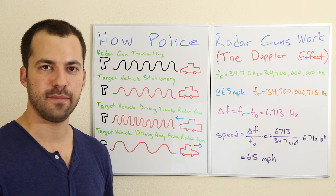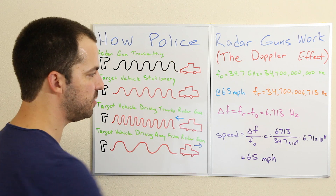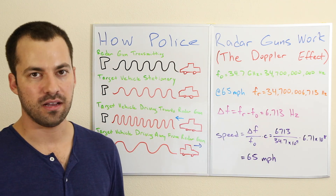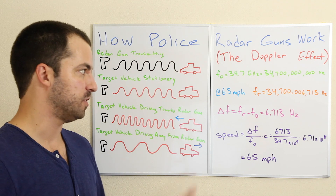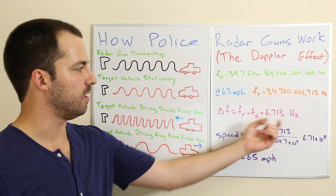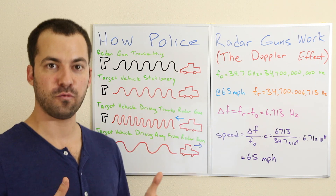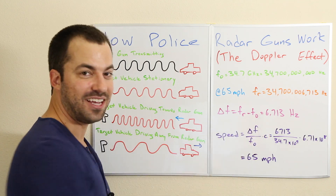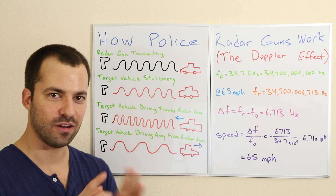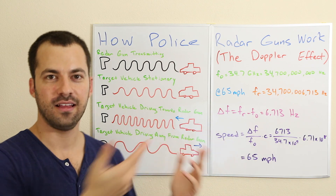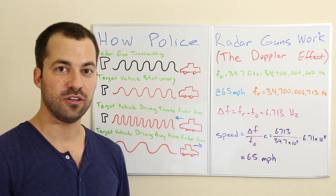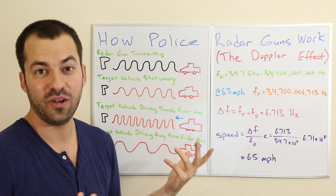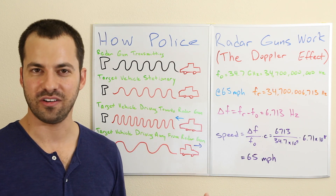So if a radar gun has the capability to tell you directional information, it's basically looking at the change in frequency and seeing if it's a positive or negative number. If it's positive, it'll say that vehicle is coming towards us because the frequency is going up. If this number is negative, the frequency is going down and therefore that vehicle is moving away from us. That's it — all the radar gun is doing is looking at the change in frequency and doing a little bit of math. Very simple.